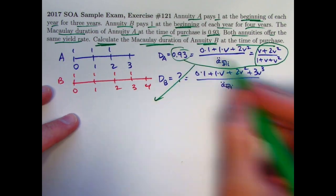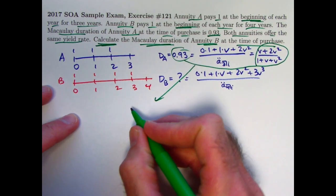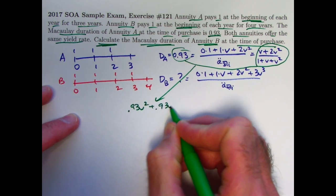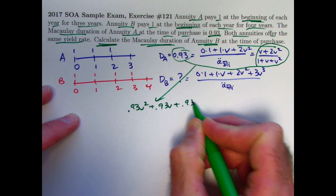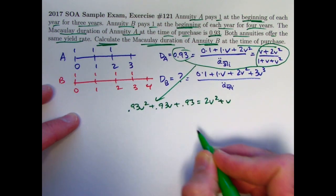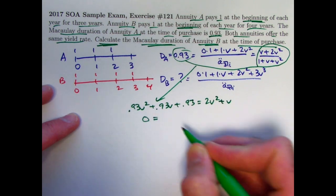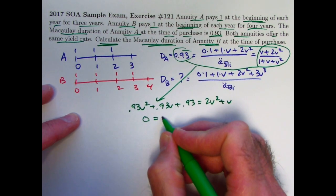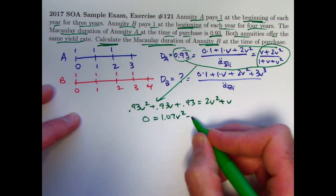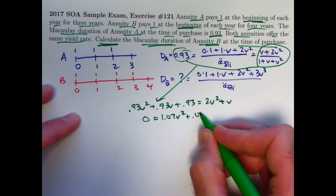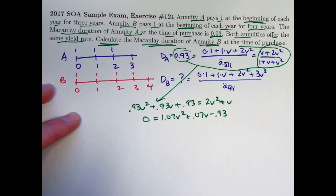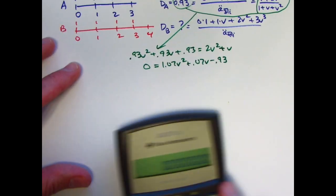We can use the quadratic formula. So multiply both sides by one plus v plus v squared. We're going to get 0.93 v squared plus 0.93 v plus 0.93 equals 2 v squared plus v. I think I'll subtract everything from the left. Zero will equal 2 minus 0.93 would be 1.07 times v squared, 1 minus 0.93 would be 0.07, and then we have a minus 0.93. Now use the quadratic formula.